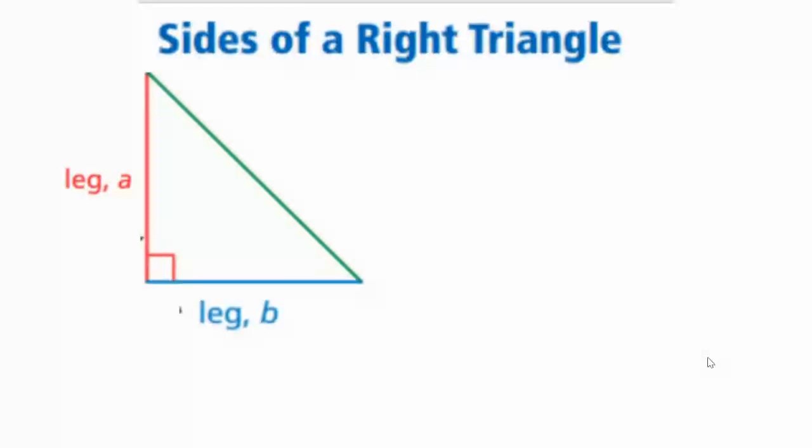those are called your legs. The legs of the right triangle. There are two of them. One is called, and if we're going to label it with actual letters, one is A, one is B. They're really interchangeable as long as you know those are the legs.